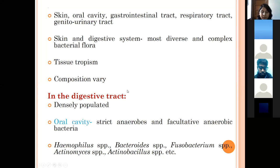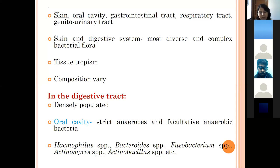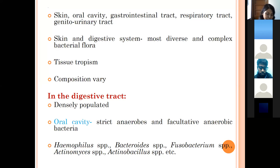The digestive tract is densely populated with normal flora. Its parts — the oral cavity, stomach, and intestine — all harbor bacteria. The oral cavity contains strict anaerobic and facultative anaerobic bacteria and is considered the most complex and heterogeneous microbiological habitat, with many types of bacteria present.